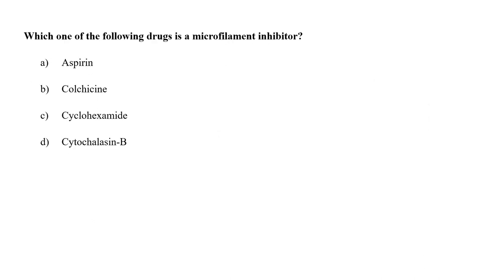Which one of the following drugs is a microfilament inhibitor? A. Aspirin, B. Colchicine, C. Cycloheximide, or D. Cytochalasin B? Cytochalasin B blocks the monomer addition to actin filaments towards its fast-growing ends, thus inhibiting microfilaments. So the correct answer is option D, Cytochalasin B.